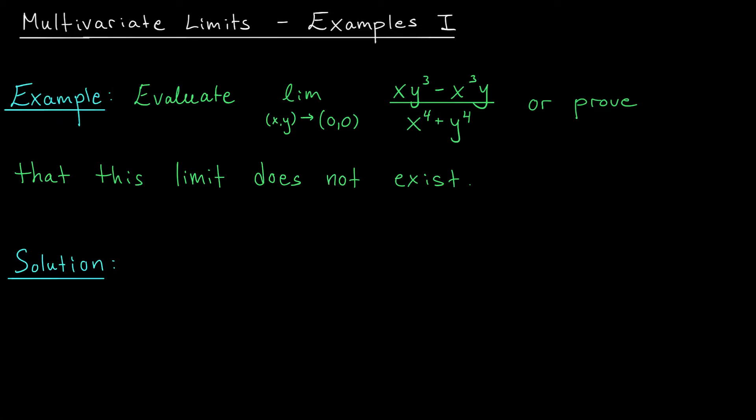Hi everyone, and welcome back. In this video, I have a second example for you on working with multivariate limits. Specifically, we are interested in studying this limit: the limit as (x,y) goes to (0,0) of the function (xy³ - x³y) divided by (x⁴ + y⁴). We are either going to evaluate this limit, or we're going to show that it doesn't exist.